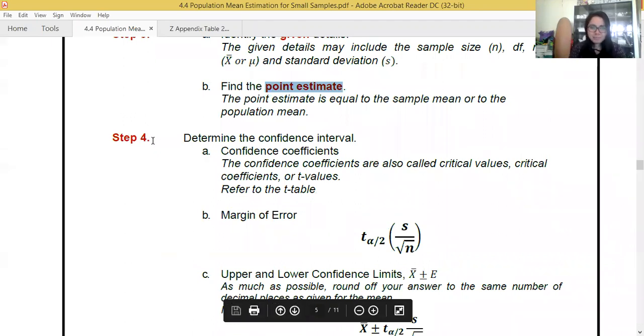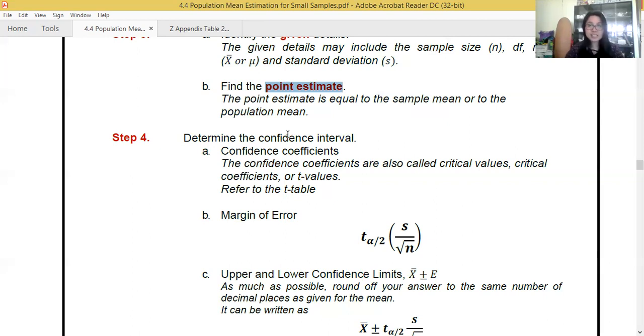This is just the same with our lesson last Monday. The only difference is you need to add the degrees of freedom. Then the point estimate. Remember that the point estimate is equal to the sample mean or to the population mean. Then for number five, I have a mnemonics for step four. I call it CELUI. That's C-E-L-U-I. It stands for C, confidence coefficients, E, margin of error, L, lower limit, U, upper limit, and I, the interpretation. CELUI.